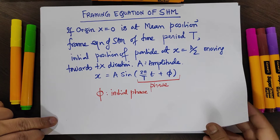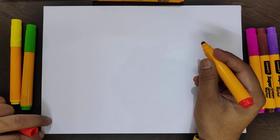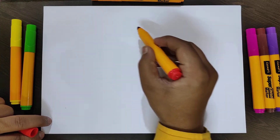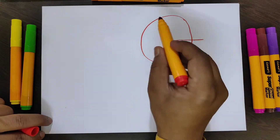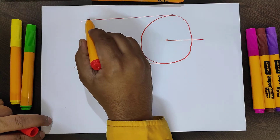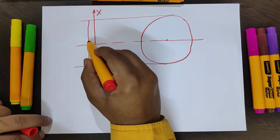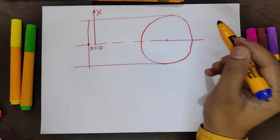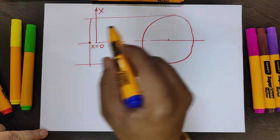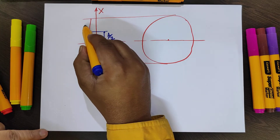So we will work that out on the next page. In that question, at time t = 0, x = a/2 and the particle is moving towards the positive direction of the x-axis. With reference to the reference circle, this is the reference circle, and the projection of this uniform circular motion is SHM. Here we choose x = 0 at the mean position. At the starting position, as per the condition of the given problem, the particle is at x = a/2.